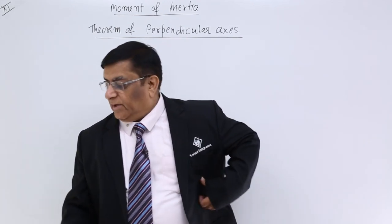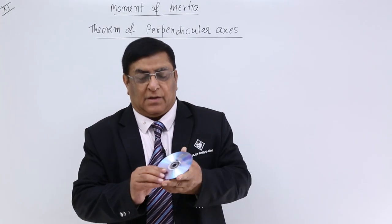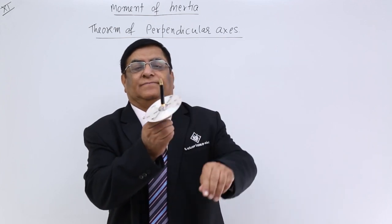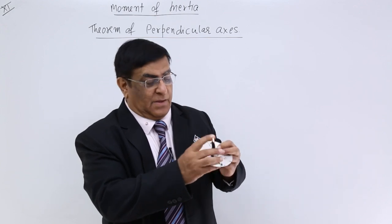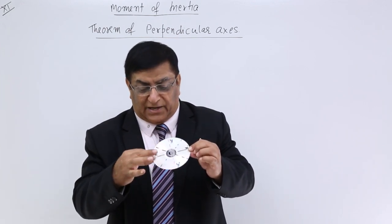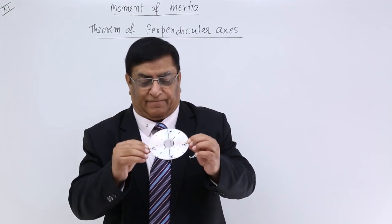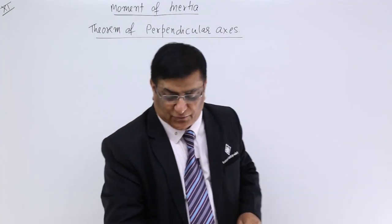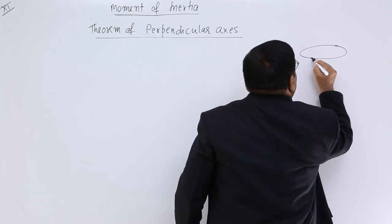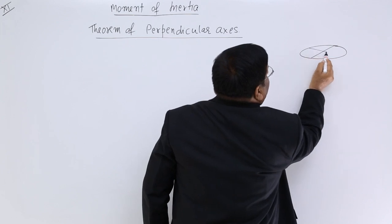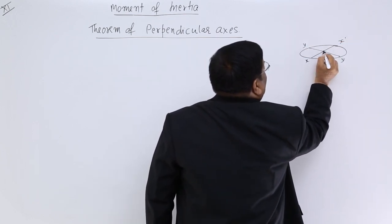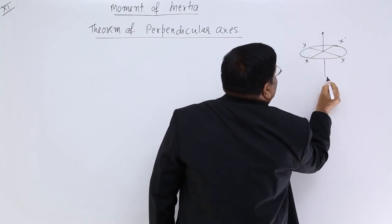First we have to understand what a perpendicular axis is. Suppose we have a disc — this disc can be rotated in three ways. One is about this axis, which is perpendicular to the plane. Another is this axis, which is a diameter in the plane. Perpendicular to it is this red one, also in the plane. This disc has one diameter — let us call it xx — and perpendicular to this another diameter, yy. There is also a third axis, zz.